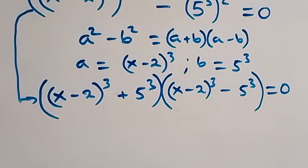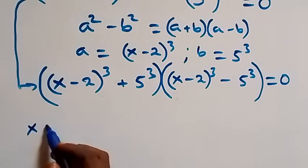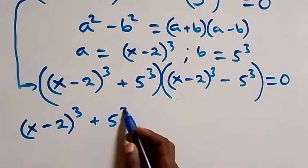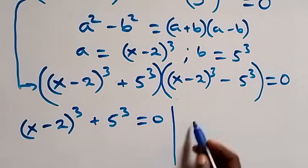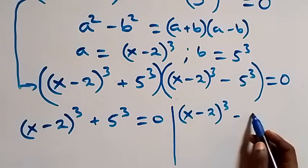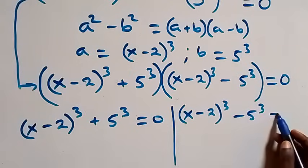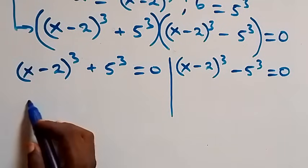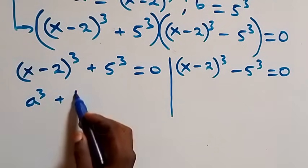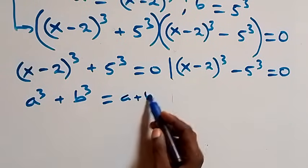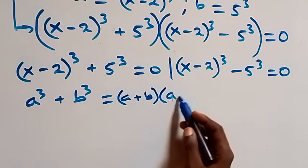We now have two possible cases. The first case: x minus 2 raised to power 3, plus 5 raised to power 3, equals to 0. This follows the sum of cubes identity: a cubed plus b cubed equals a plus b, times open bracket a squared minus ab plus b squared.